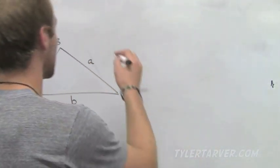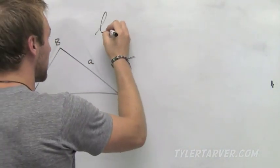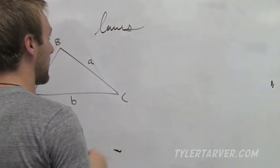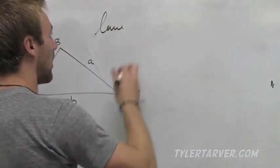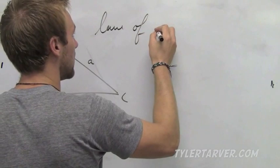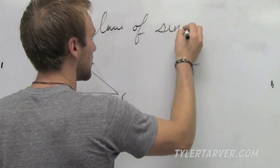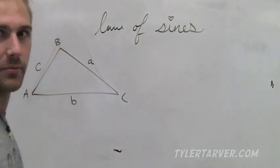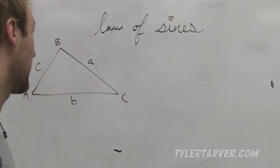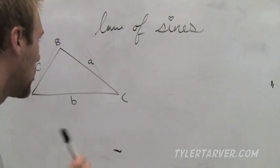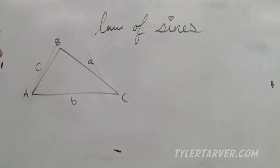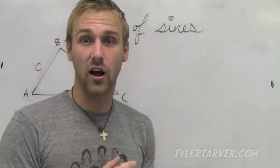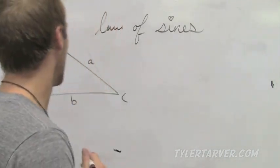First, we'll start with the Law of Sines. I'm going to write it in cursive because it makes me look very elegant and formal. What the Law of Sines is — it's essentially telling us a proportion that we can find in any triangle. It doesn't have to be a right triangle.